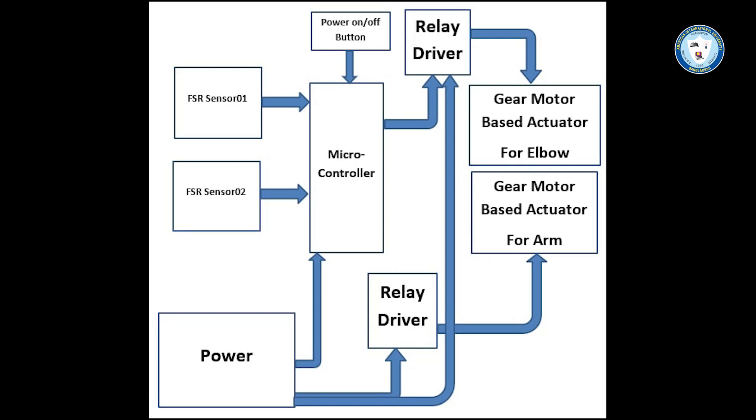Specifically, there are numerous individuals who suffer from partial paralysis in their upper limbs, which may result from conditions such as stroke, spinal cord injury, etc. To mitigate these challenges, our team has developed an upper limb exoskeleton.